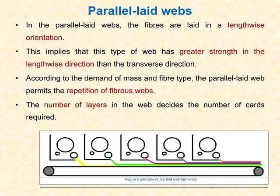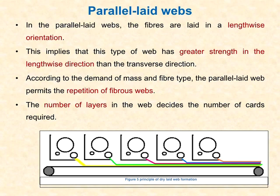According to demand for mass and fiber type, the parallel lay web permits the repetition of fibers placed above one layer. The number of layers in the web decides the number of cards required. One demerit of this process is high power consumption and space consumption, because the number of layers in the parallel lay process requires an equal number of card machines. For example, to create five layers, five carding machines must be used.